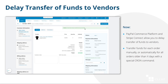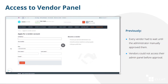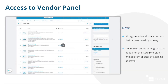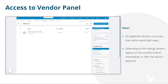The next important change in 4.13.1 is access to the vendor panel. Prior to version 4.13.1, all vendors got the new status after they registered. With that status, vendors didn't appear on the Marketplace storefront and couldn't even access their vendor panel until the administrator approved them. Now a new setting in the vendor data pre-moderation add-on is responsible for the access of new vendors to the store.